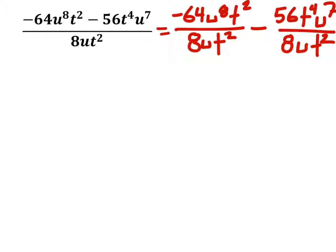Now I can look at each of these and see that here I've got a negative 64 divided by 8. And what is negative 64 divided by 8? That would give me a negative 8. Then let's look at u to the power of 8 divided by u. Well, u in the denominator has a power of 1, which means that this is u to the power of 8 minus 1, which would give us u to the power of 7 now.